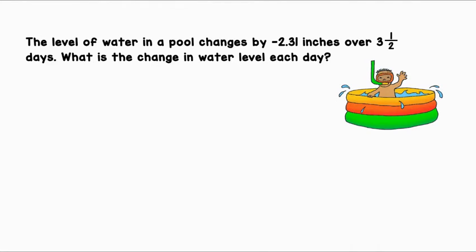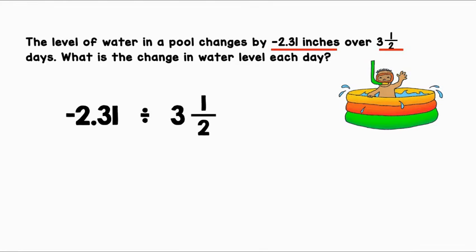The level of water in a pool changes by negative 2.31 inches over three and one-half days. What is the change in water level each day? We can see that the total change of water is negative 2.31 inches. This happens over three and one-half days. Let's divide to find the change of water each day, which will be in one day.